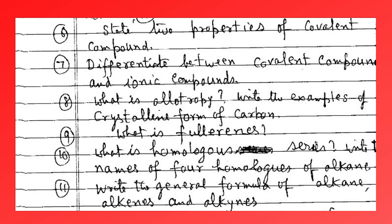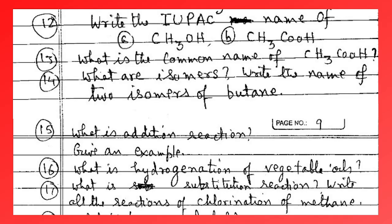What do you mean by fullerene? What is a homologous series? Write the names of four homologues of alkane. Write the general formula of alkane, alkene, and alkyne. Write the IUPAC name of CH3CHO and CH3COOH. What is the common name of CH3COOH? What are isomers? Write the names of the two isomers of butane.